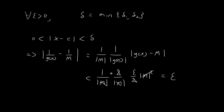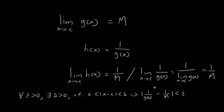With this value of delta, if |x minus c| is smaller than delta, then |1 over g of x minus 1 over m| equals 1 over |m| times 1 over |g of x| times |g of x minus m|. Since x minus c is smaller than delta — the minimum of delta 1 and delta 2 — we know 1 over |g of x| is smaller than 2 over |m|, and |g of x minus m| is smaller than epsilon over 2|m| squared. Multiplying these together, all terms cancel out, giving us exactly epsilon. So for whatever arbitrary value of epsilon, I can always find a value of delta such that |1 over g of x minus 1 over m| is smaller than epsilon. This establishes the epsilon-delta definition and proves the reciprocal law.